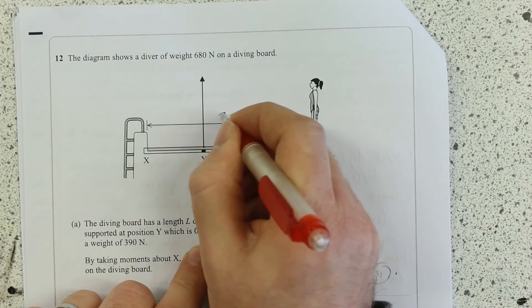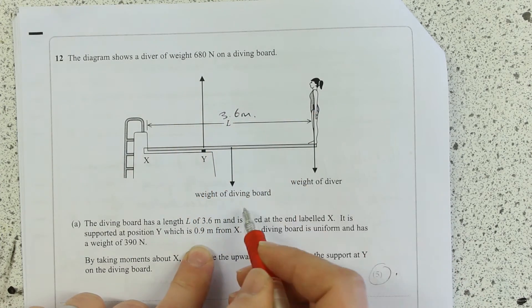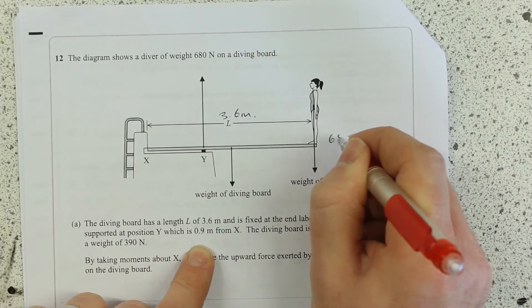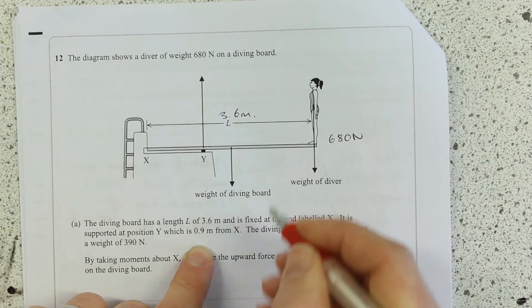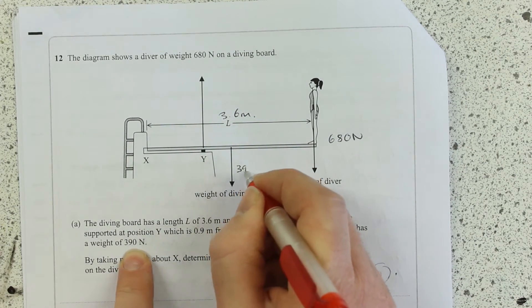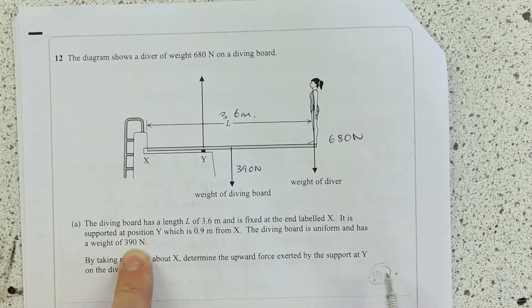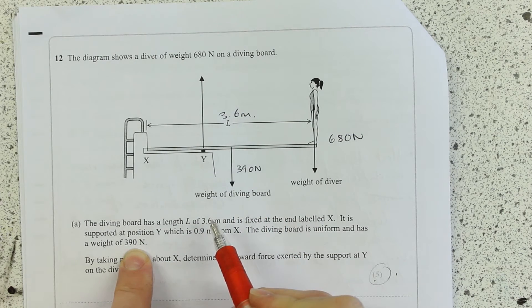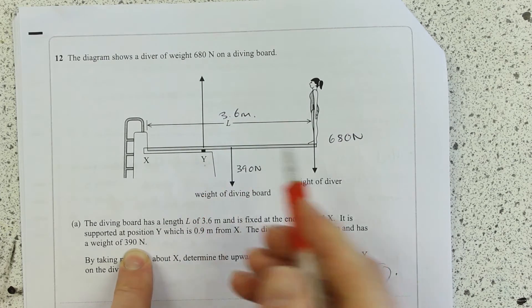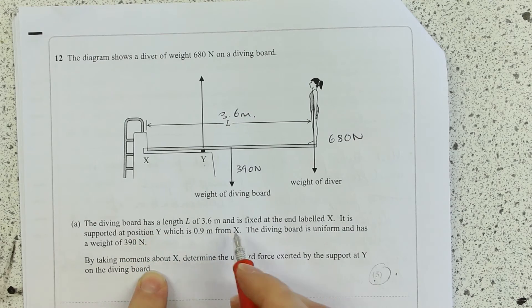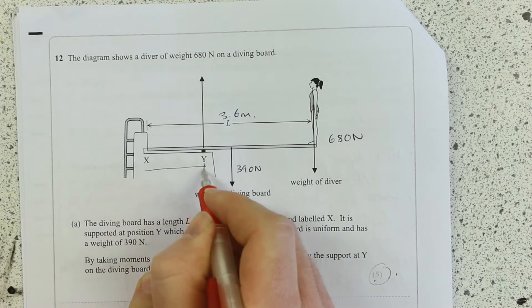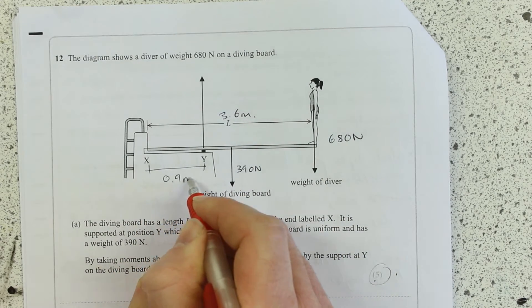So length 3.6 meters, weight of the diver 680 newtons, weight of the diving board itself 390 newtons. I think if some people don't get full marks on this, they're probably going to have ignored this here. And we know that the distance from x to y is 0.9 meters.